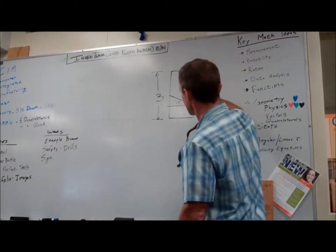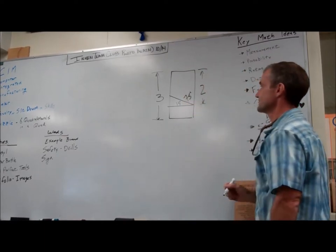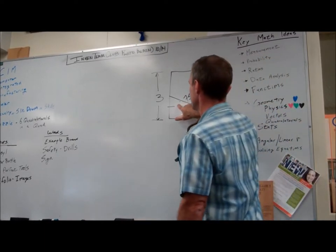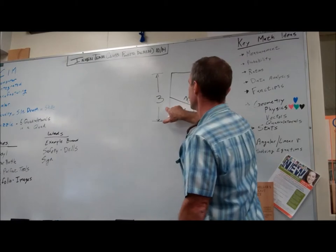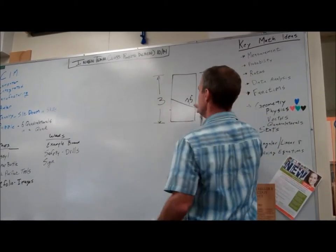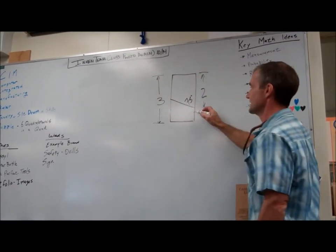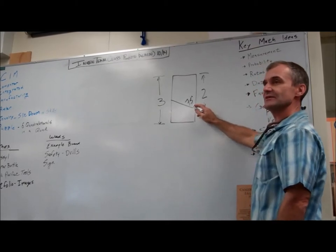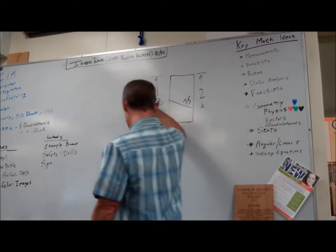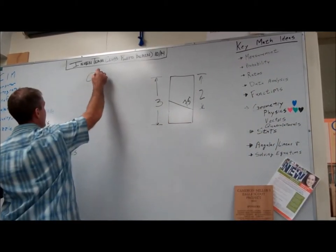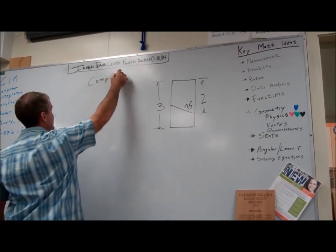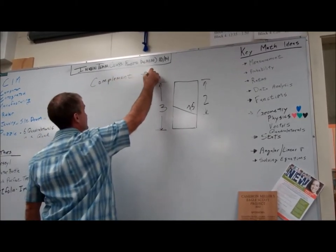This is its complement. It's 75 degrees. And then what I have here is two parallel lines cut by a transversal. Everybody understand the complement of 15 is 75. So the first word is complement, and that means two angles that add up to 90 degrees.